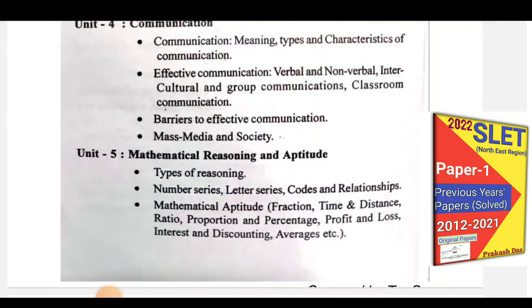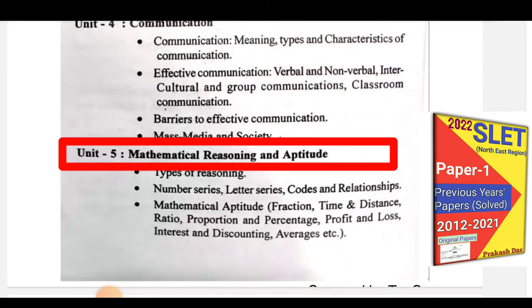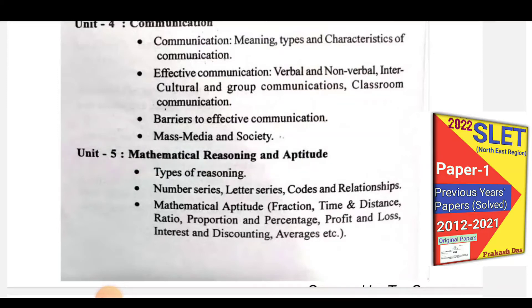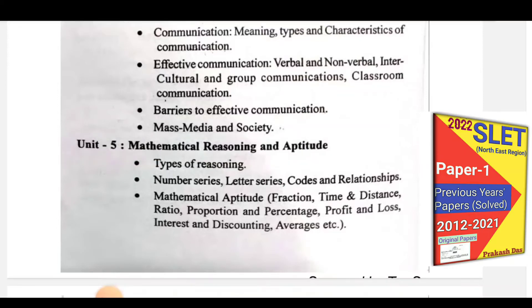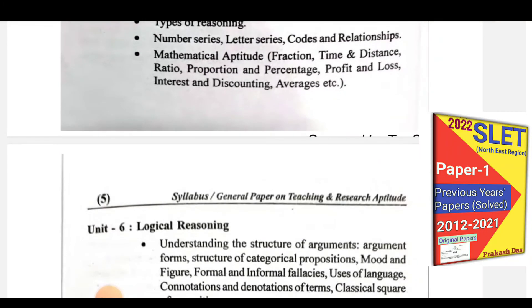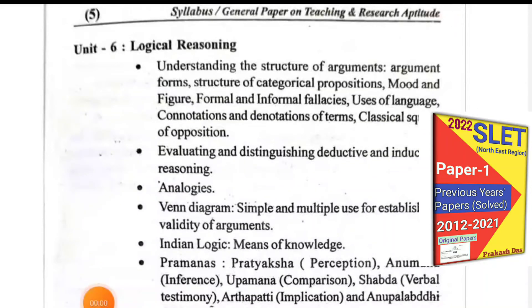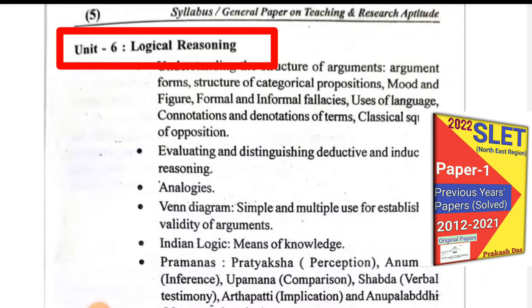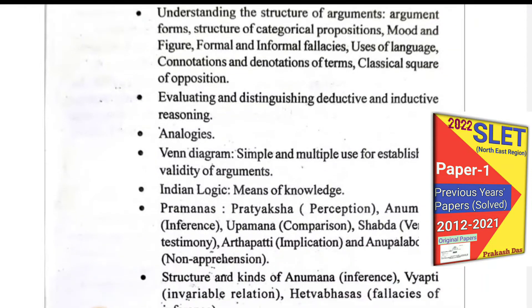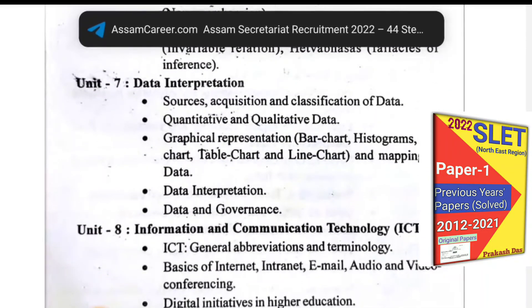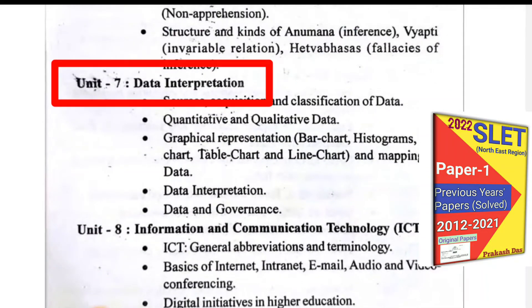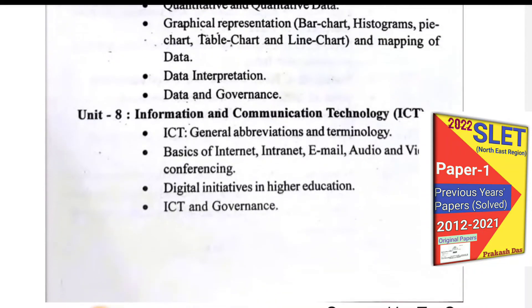Unit Five is Mathematical Reasoning and Aptitude, which includes mathematical questions and reasoning questions. Unit Six covers Logical Reasoning, so you will have logical reasoning questions in that unit as well.